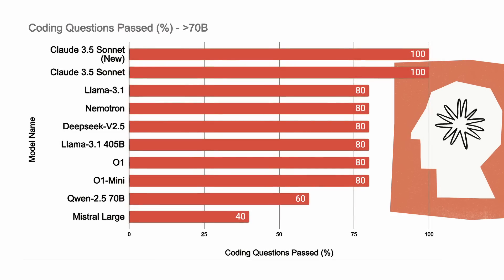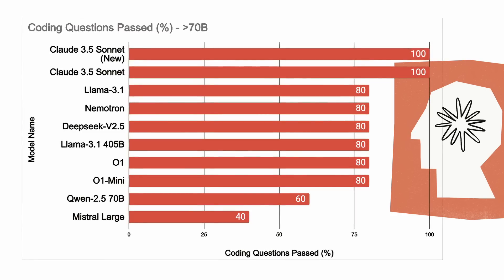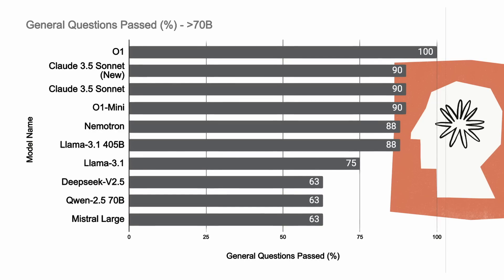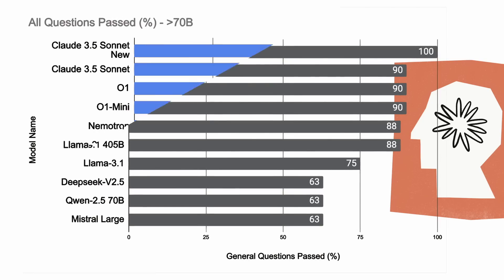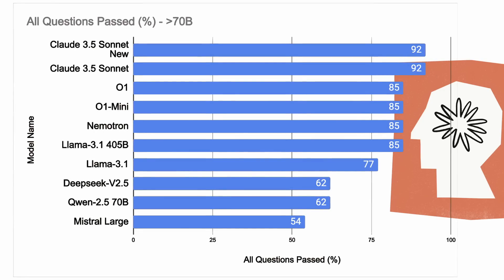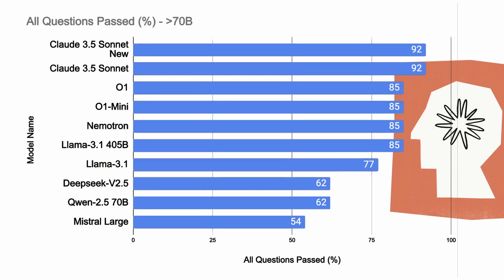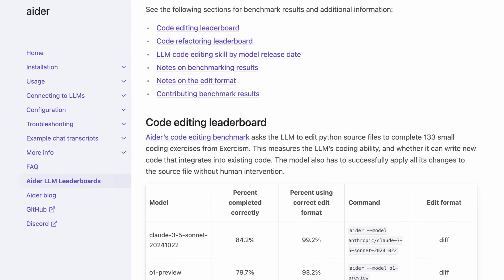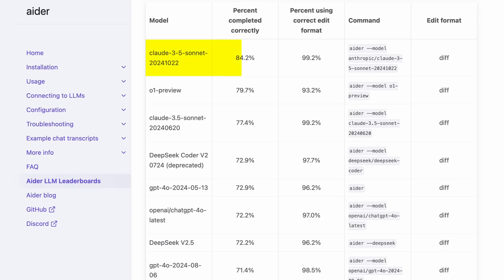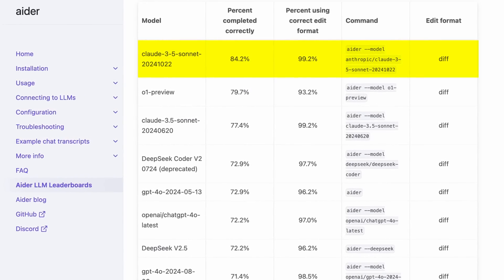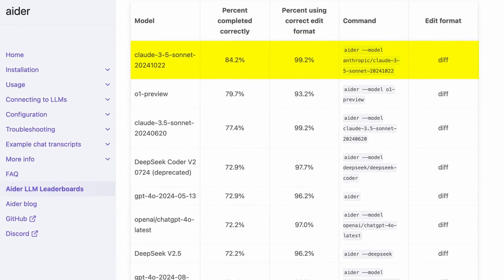It's majorly amazing in coding and everything. The previous model also passed all the questions in coding, which is just amazing, and this one is similar. I'll need to change my questions now because Claude is literally beating my benchmarks. Also, Aider has shared their benchmarks, and it tops the chart, beating O1 Preview as well, which is also just amazing.